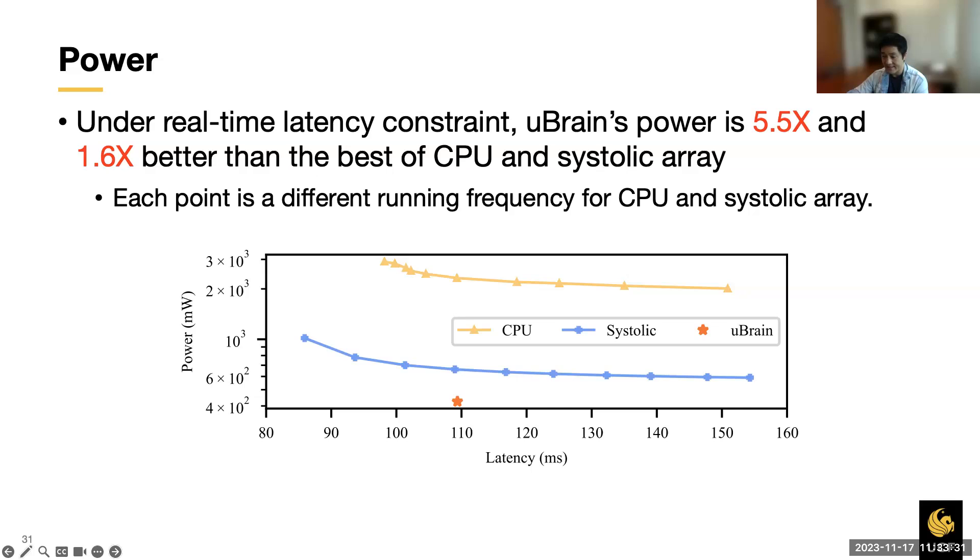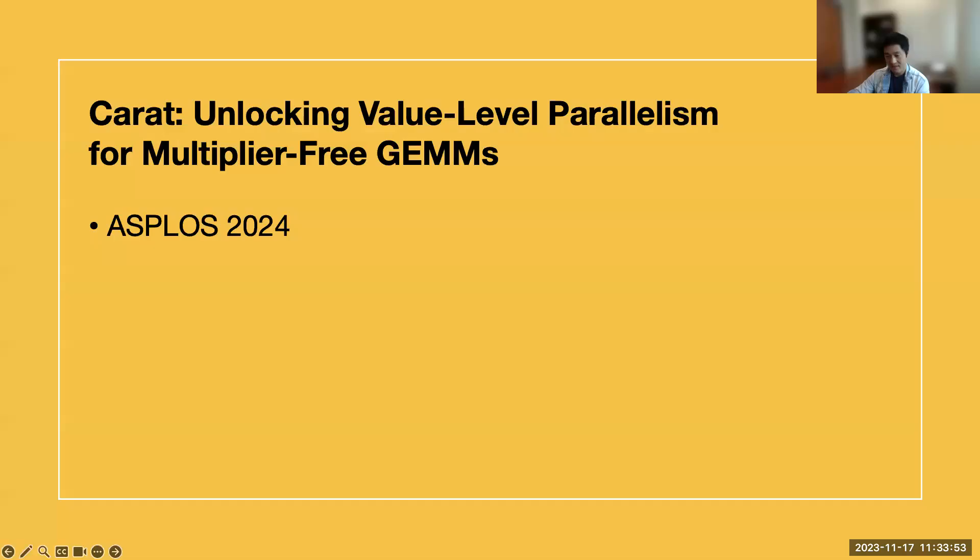Finally, we show the power of different BCIs under an identical latency constraint. Though CPU and systolic arrays can tune their running frequency and power indicated by each of the points on the curve, UBrain is still better than their best numbers by up to 5.5 times and 1.6 times. This concludes the UBrain work.